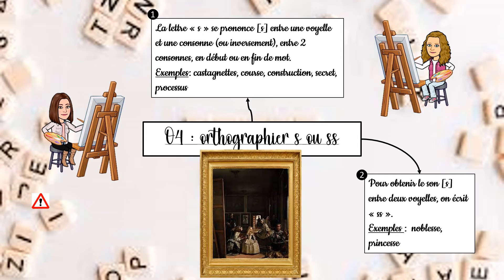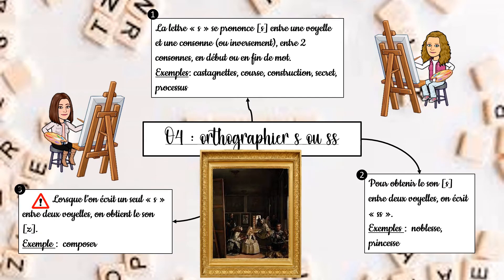Deuxièmement, pour obtenir le son S entre deux voyelles, on écrit deux S. Exemple : noblesse, princesse, etc. Troisièmement, lorsque l'on écrit un seul S entre deux voyelles, on obtient le son Z, comme par exemple dans le mot composer.